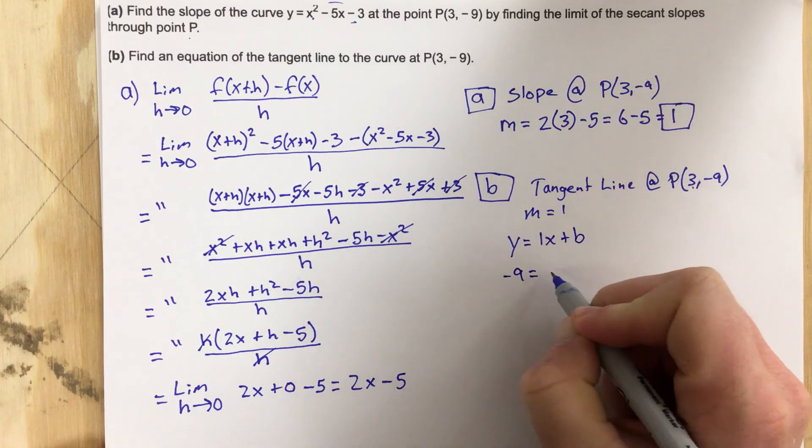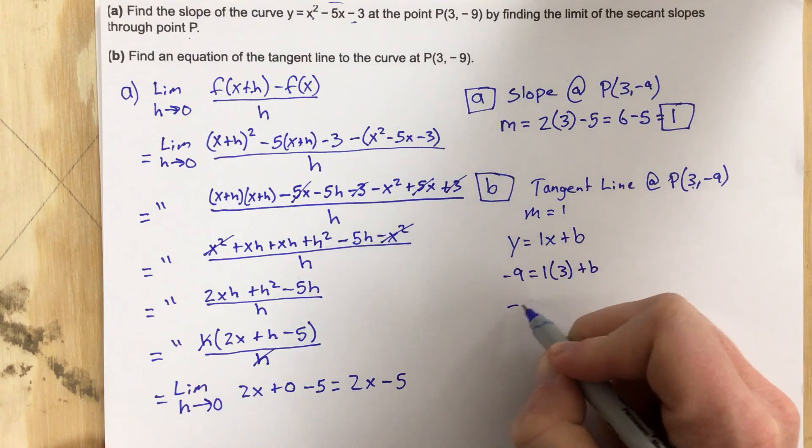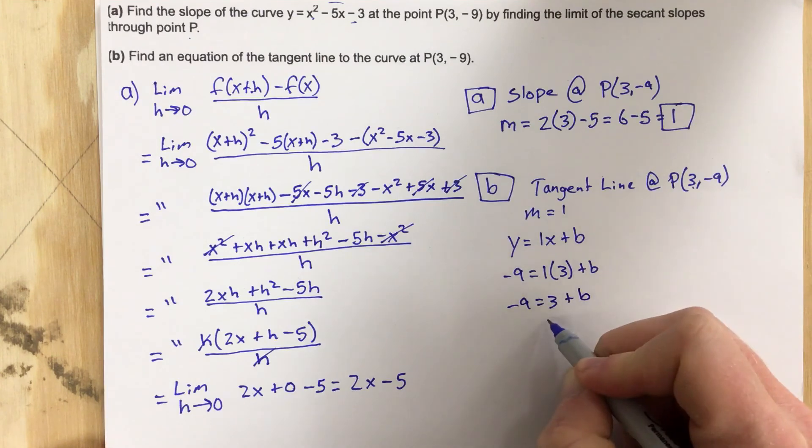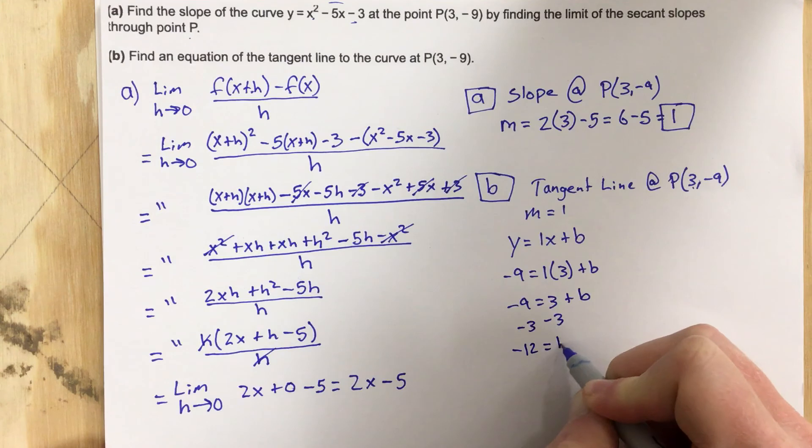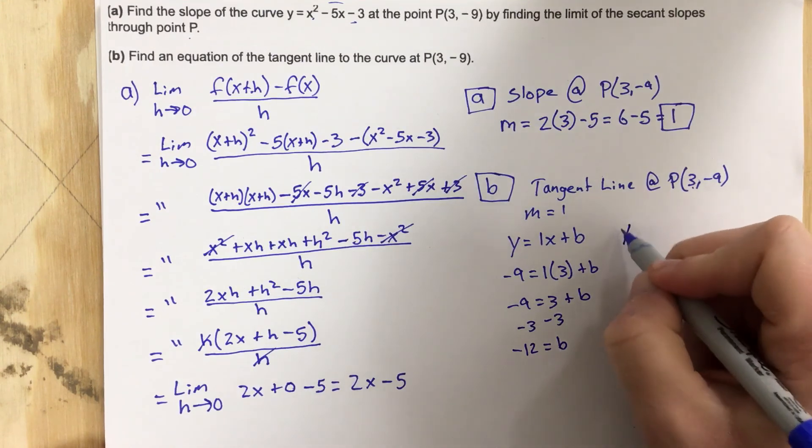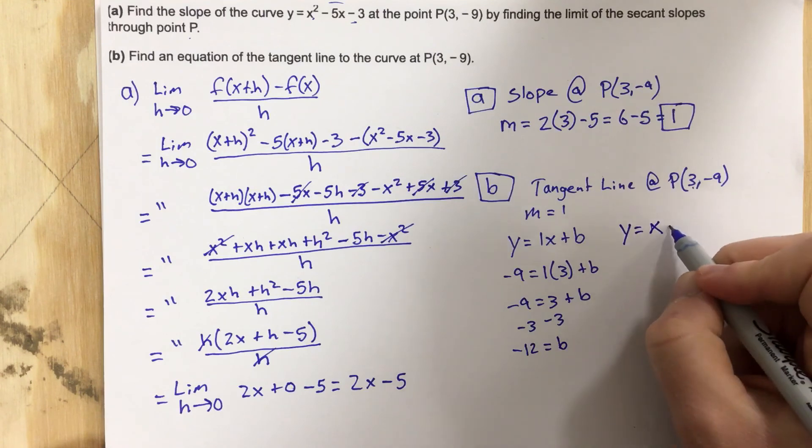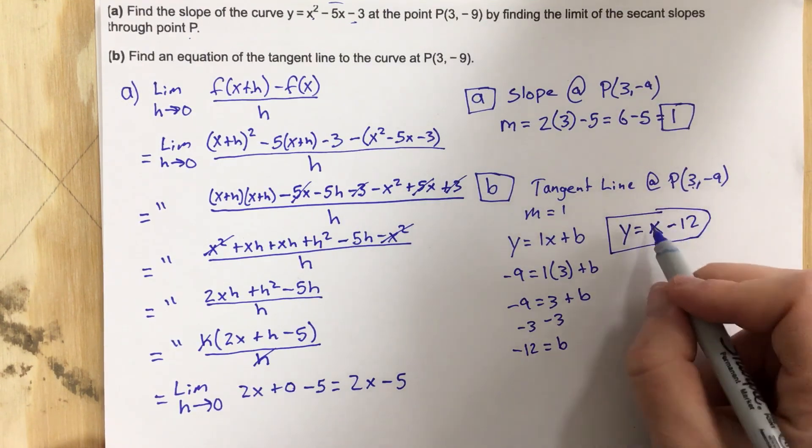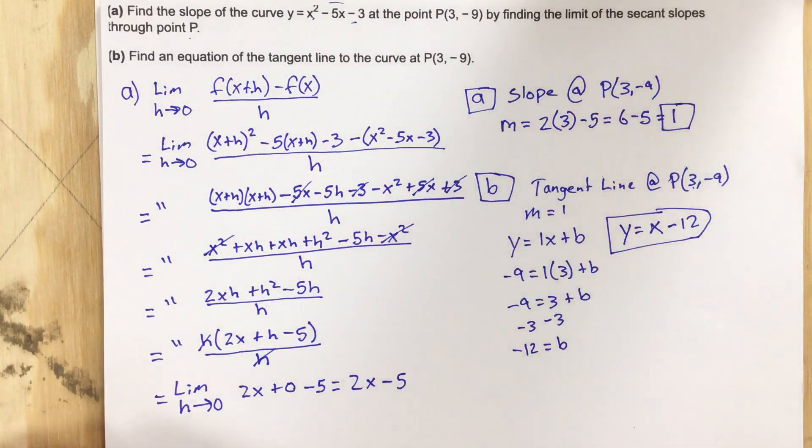...so -9 equals 1 times 3 plus b. So -9 equals 3 plus b. Subtract the 3. -12 equals b, which means my equation is y equals x minus 12. This line is tangent to this curve at point P(3, -9).